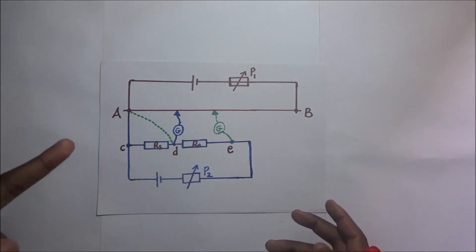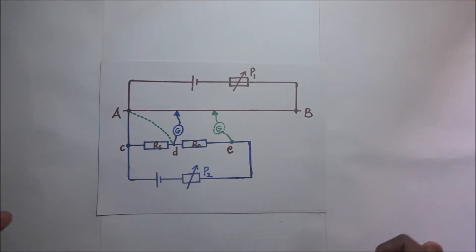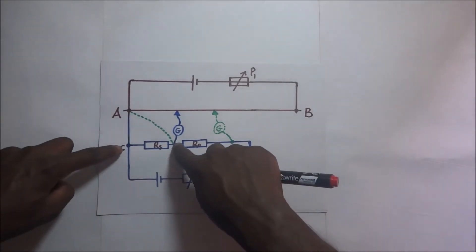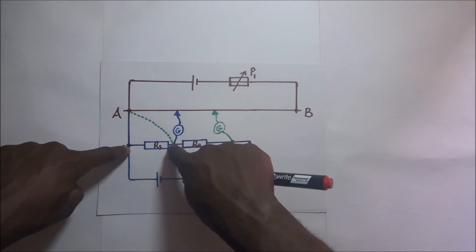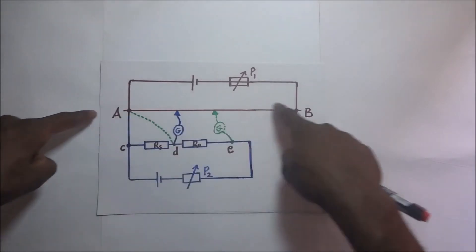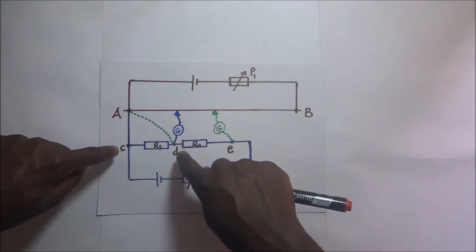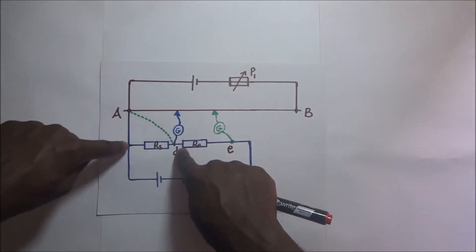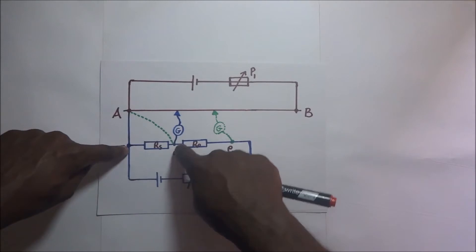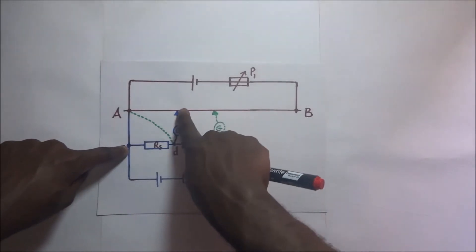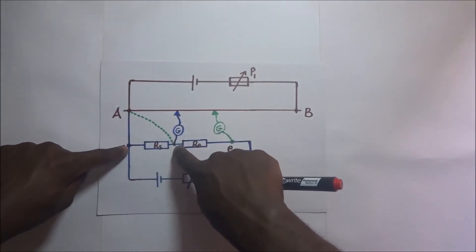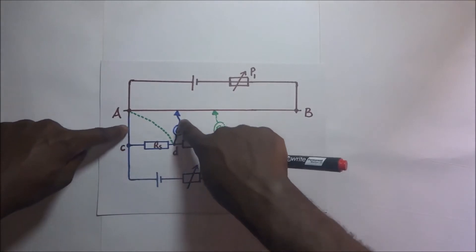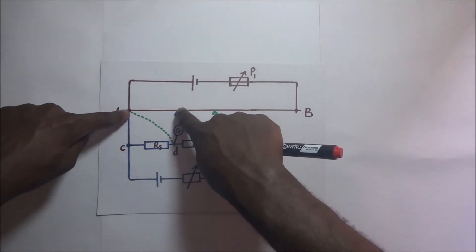In the first step, we connect part A to part C. The jockey J is connected to part D, and we move it along the slide wire to find the balance length. Since this balance length corresponds to the standard resistor RS, we shall call it LS.